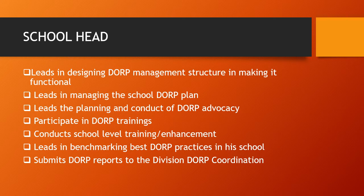What is the role of the school head in implementing the DORP program in school? The school head leads in designing the DORP management structure and making it functional. Leads in managing the school DORP plan. Leads the planning and conduct of DORP advocacy. Participates in DORP trainings. Conducts school-level training or enhancement. Leads in benchmarking best DORP practices in the school. And submits DORP reports to the division DORP coordination.